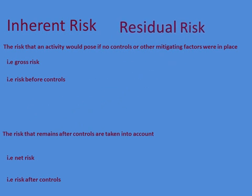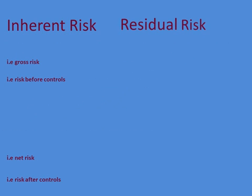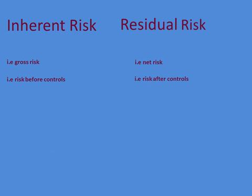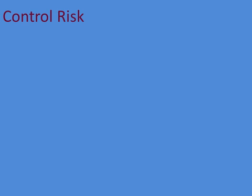To differentiate both terms: inherent risk is the gross risk and residual risk is the net risk. Inherent risk is risk before controls; residual risk is risk after controls. So if you take inherent risk and apply the controls, what you get is residual risk.